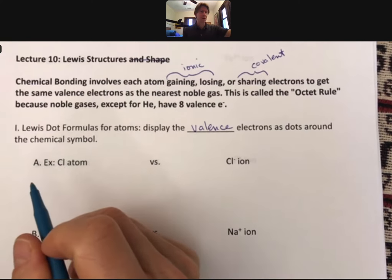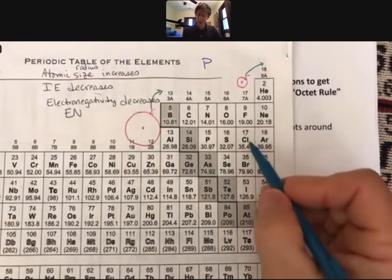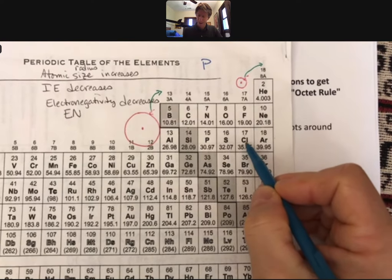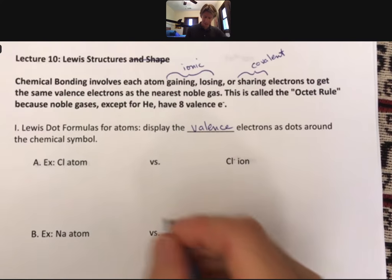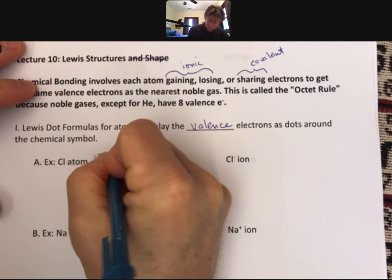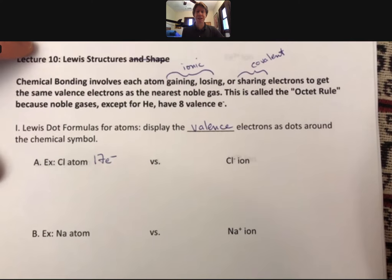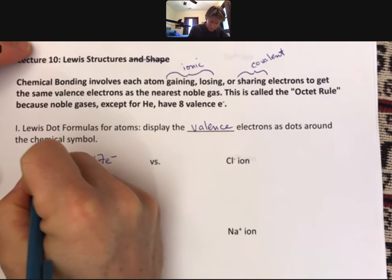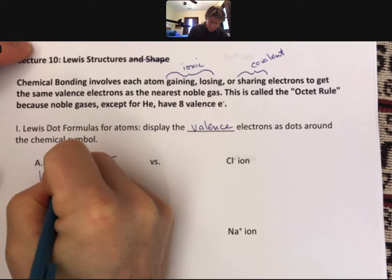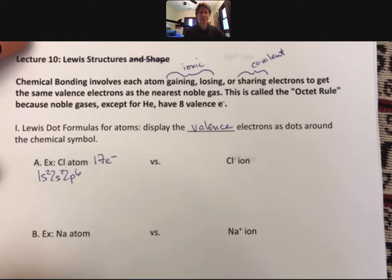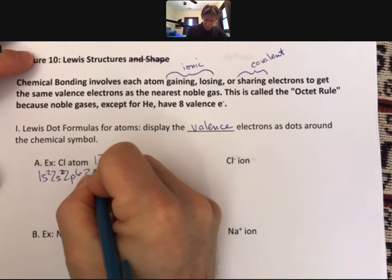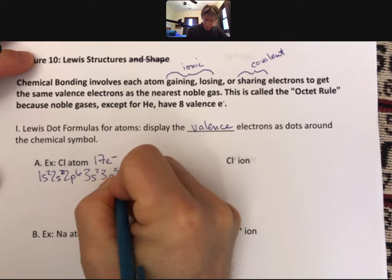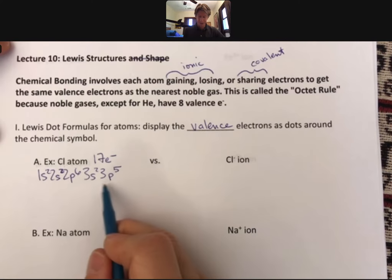Chlorine atom. I'm going to do the whole electron configuration. Chlorine's right here, it has 17 protons per atom, 17 electrons. If we put those 17 electrons into the sublevels, there would be 1s2, 2s2, 2p6, and then 3s2, 3p5.